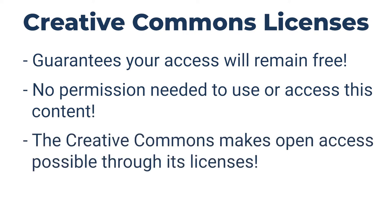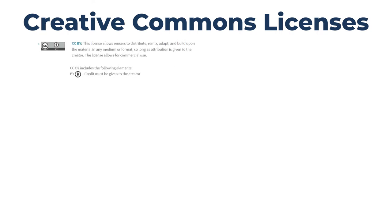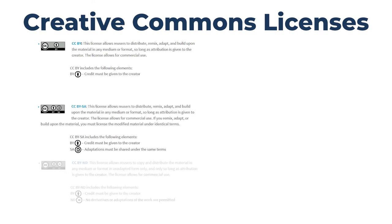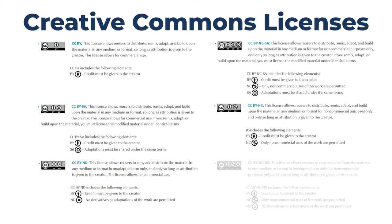The Creative Commons is an organization that makes open access accessible through its licenses. On screen now is a list of Creative Commons licenses that are used for open access resources. While it isn't necessary to memorize this list, it's still a good idea to familiarize yourself with variations in licenses. For a complete list of Creative Commons licenses, check out the link in the description of this video.